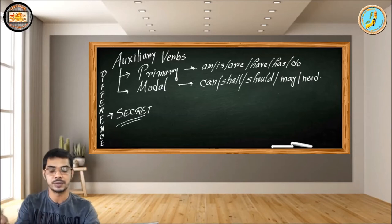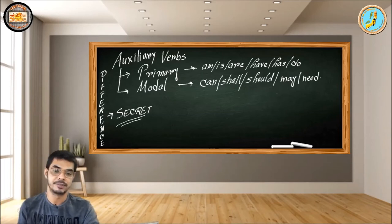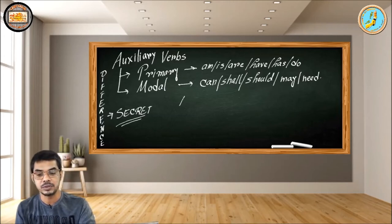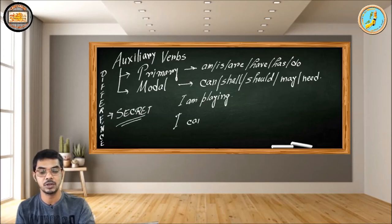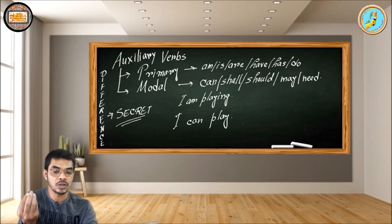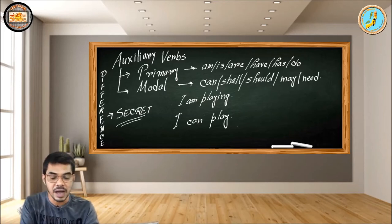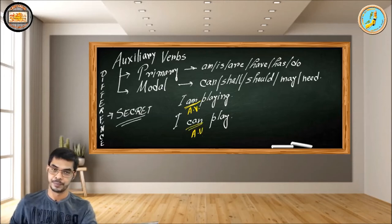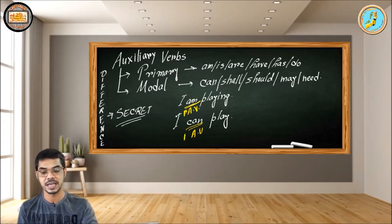So is there any difference between these two things? Let me write down something and we'll very easily understand it. If you say 'I'm playing' — and you may say 'I can play.' I'm not going after long sentences; I'm trying to do small things with small points. In 'I'm playing' and 'I can play,' you'll find two auxiliaries: one is 'am' and the other is 'can.' The difference is: 'am' is a primary auxiliary, whereas 'can' is a modal auxiliary.